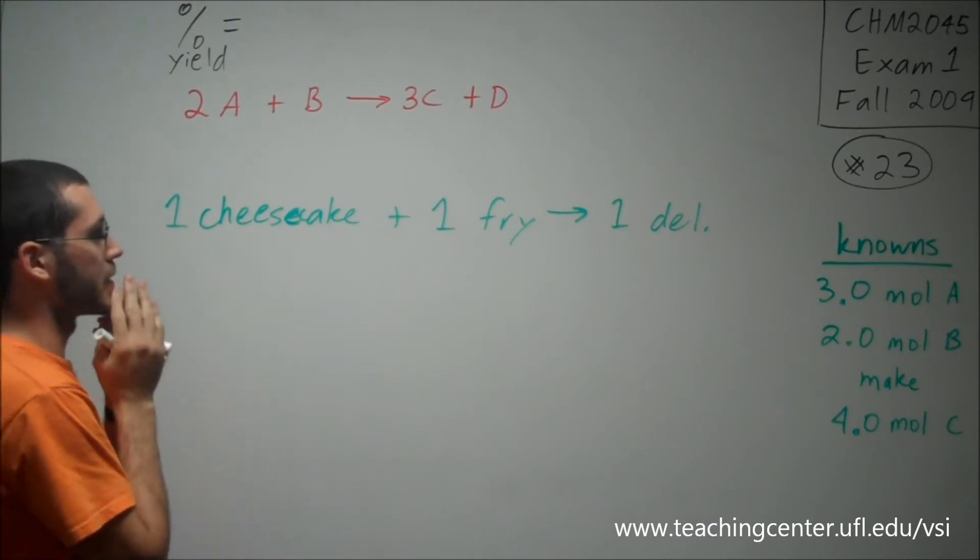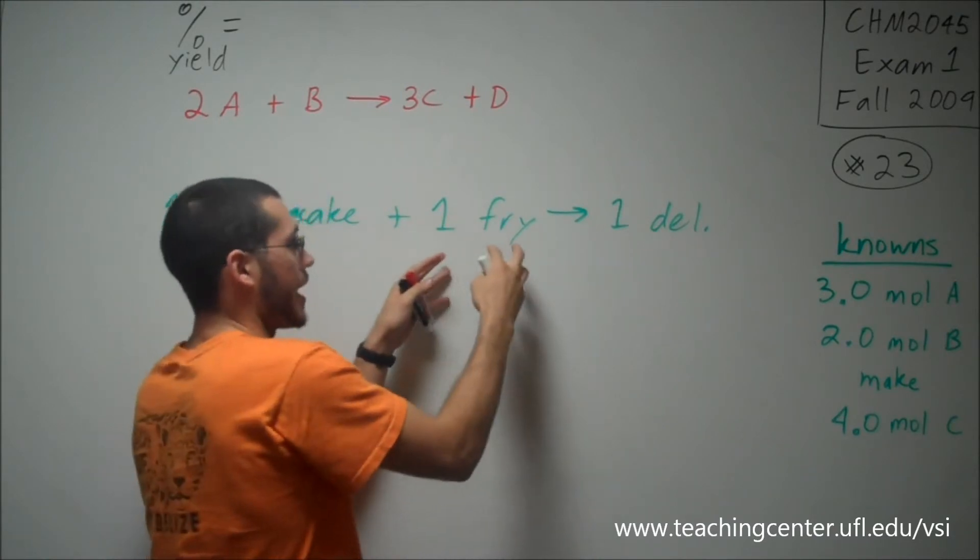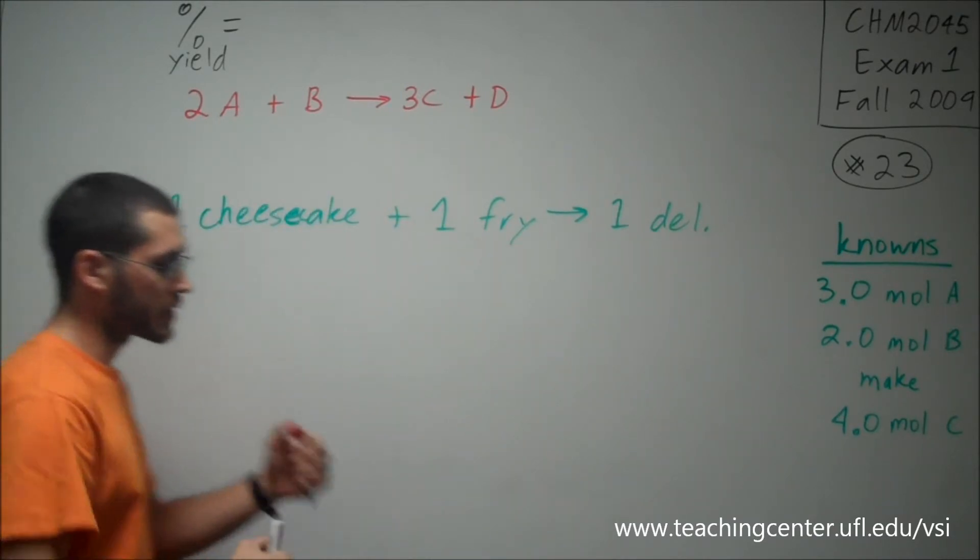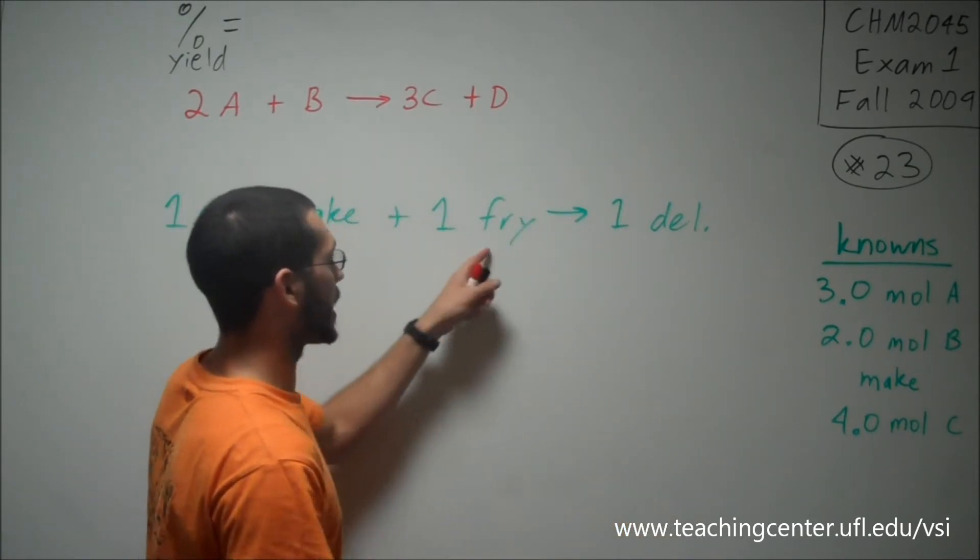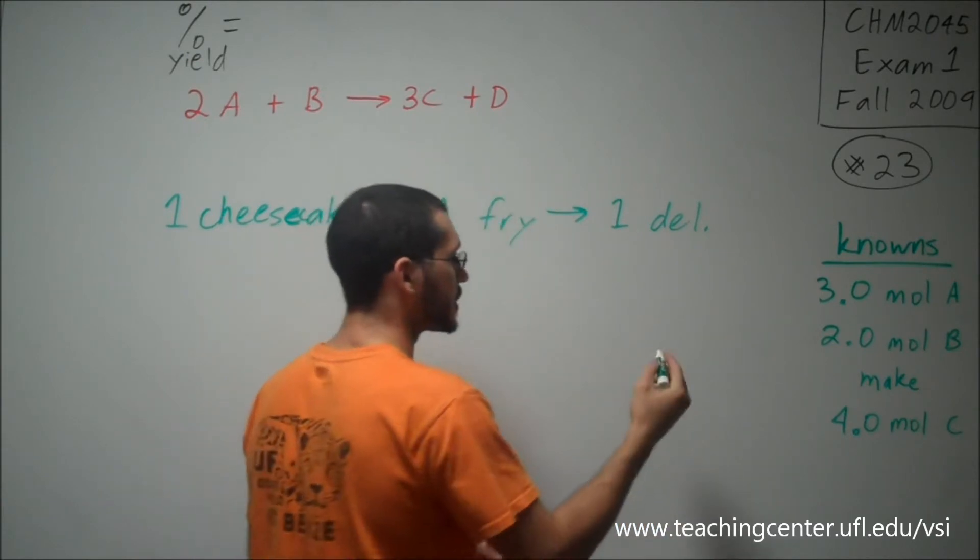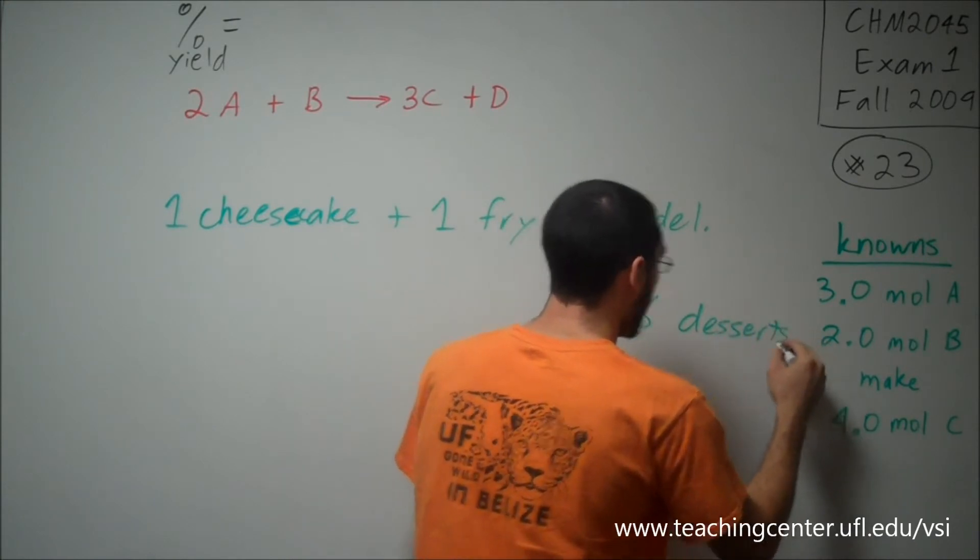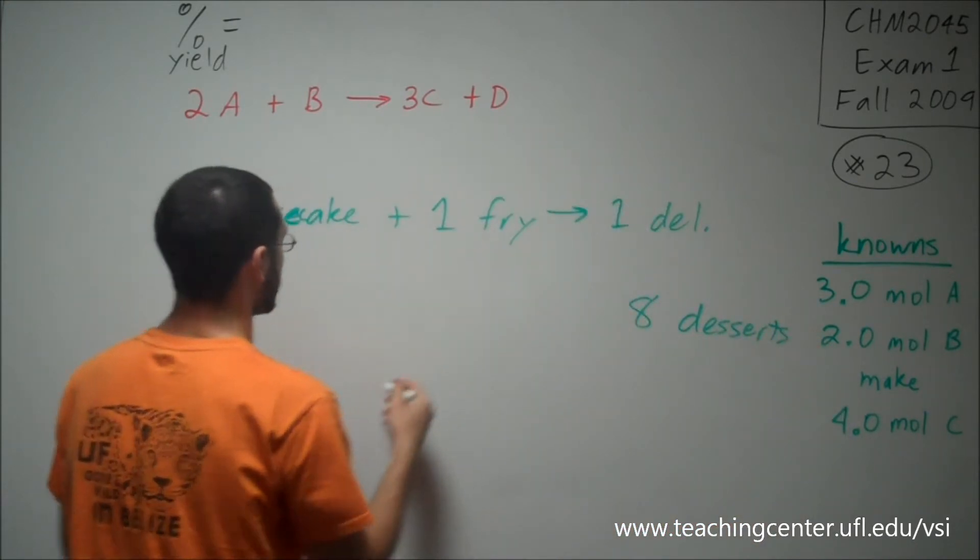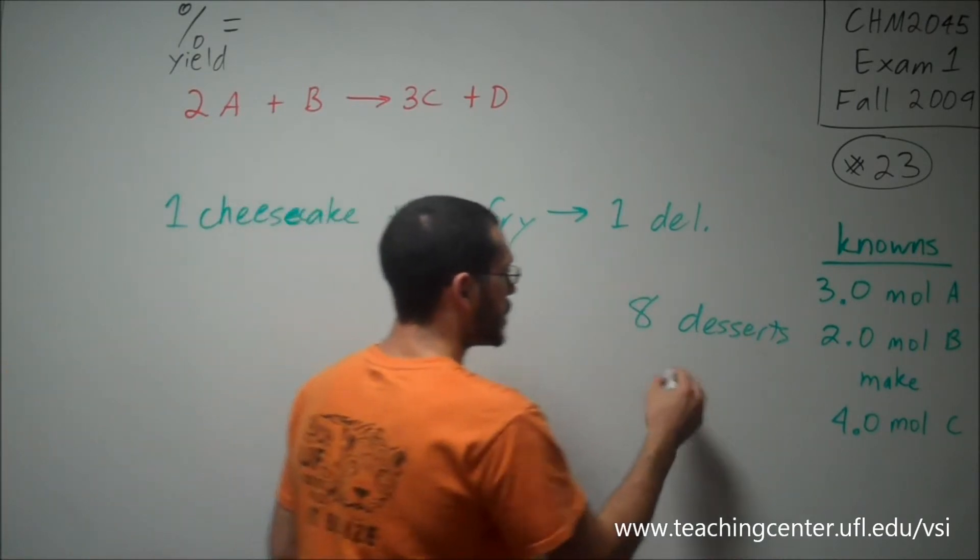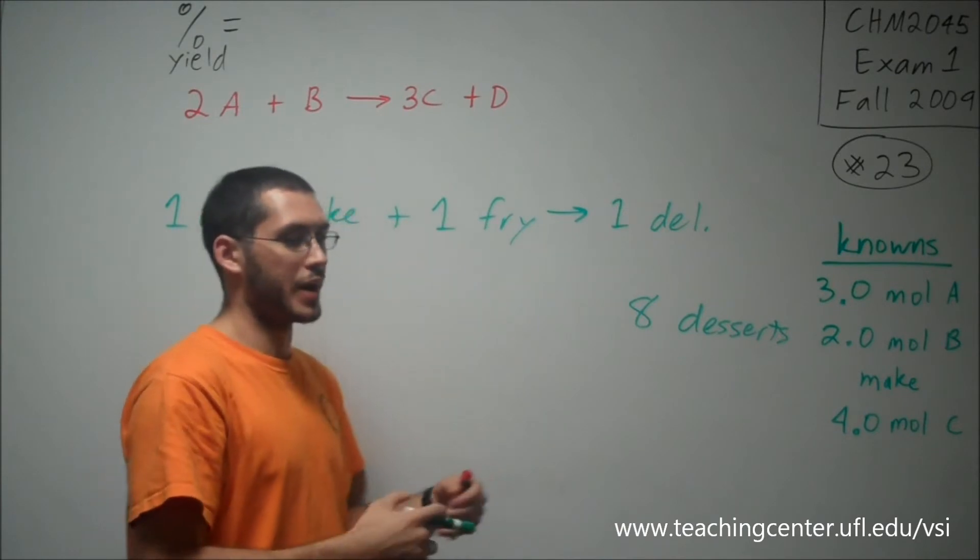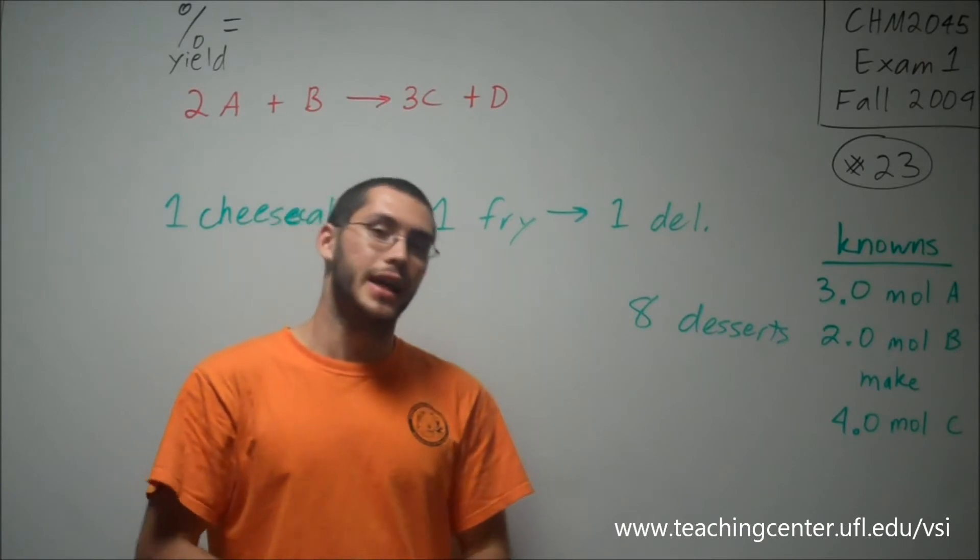So the thing is though, what if I have ten cheesecakes and I have ten fry available? And during the process, I actually drop a cheesecake and I spill some of my fry. And so ultimately, I only produce eight desserts. Even though, having started out with ten of these and ten of those, I could have made potentially ten desserts, right? So what was my percent yield of that reaction? Of my delicious dessert making? It was 80%. I only got 80% yield.